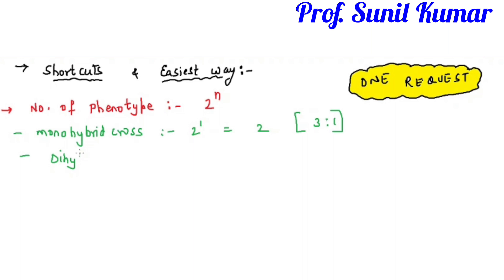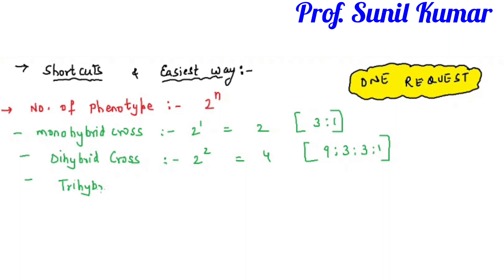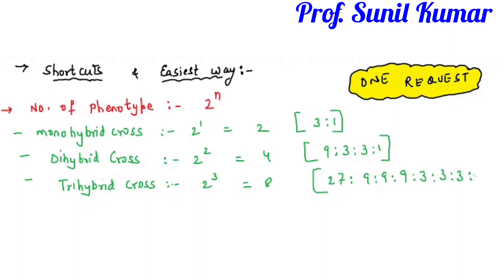For a dihybrid cross it is 2 raised to 2, so 4 phenotypes: the ratio 9:3:3:1. For a trihybrid cross it is 2 to the power 3, giving 8 phenotypes: the ratio 27:9:9:9:3:3:3:1. This makes it very easy to find the number of phenotypes — just remember the formula 2 to the power n.